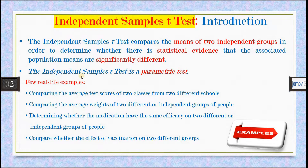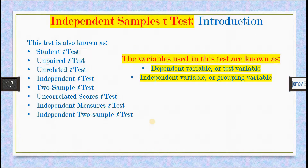Some examples of when to use this test: comparing the average test scores of two classes from two different schools; comparing the average weight of two independent groups of people; determining whether a medication has a safe efficacy on two independent groups; or comparing whether the effect of vaccination differs between two groups. This test is also known by other names: unpaired t-test, unrelated t-test, independent t-test, two-sample t-test, uncorrelated scores t-test, independent means t-test, and independent two-sample t-test.